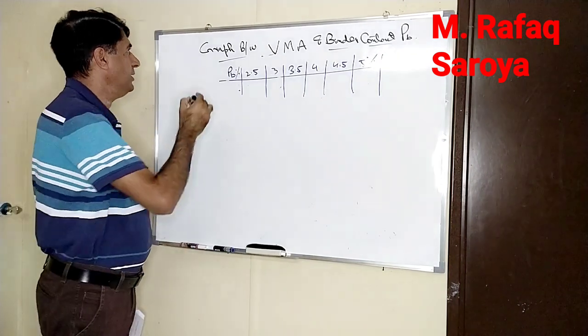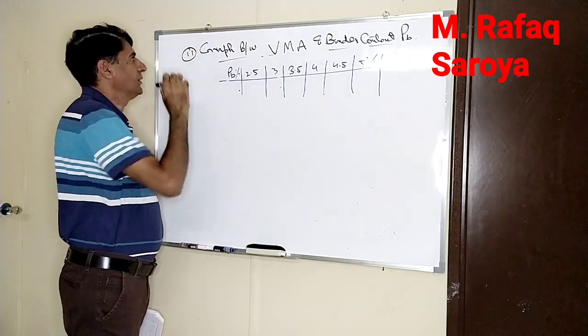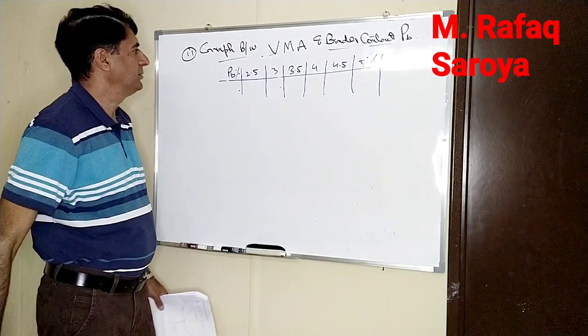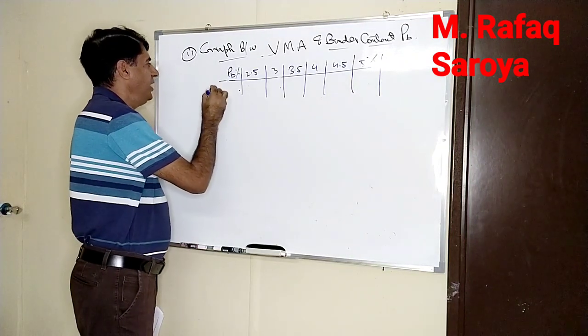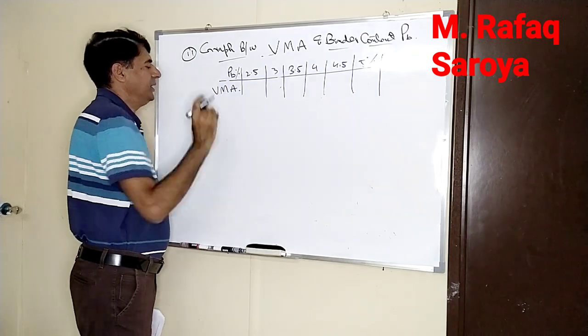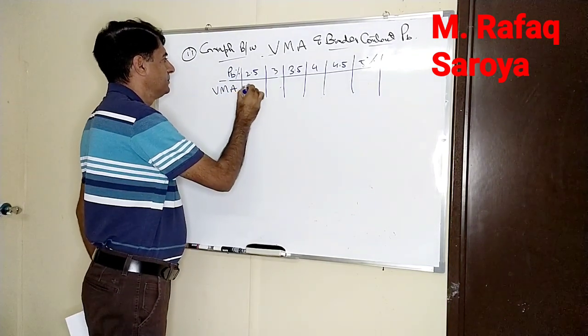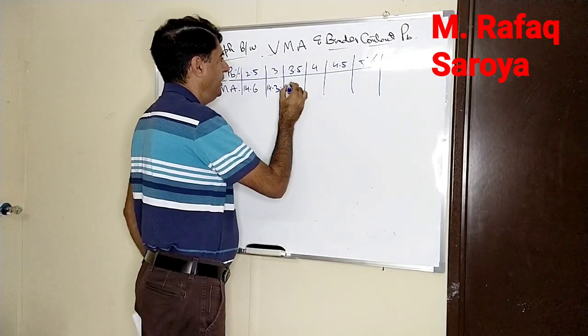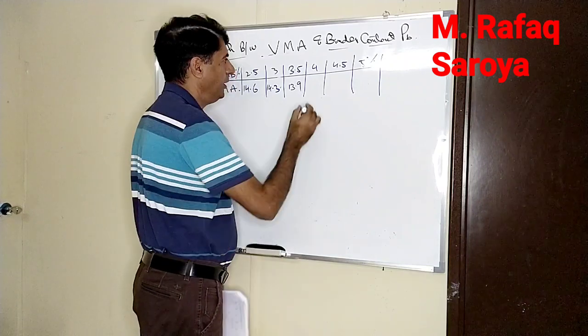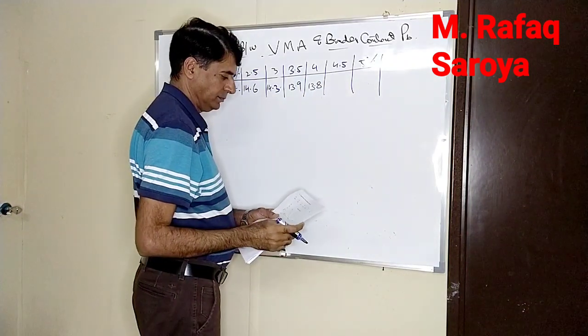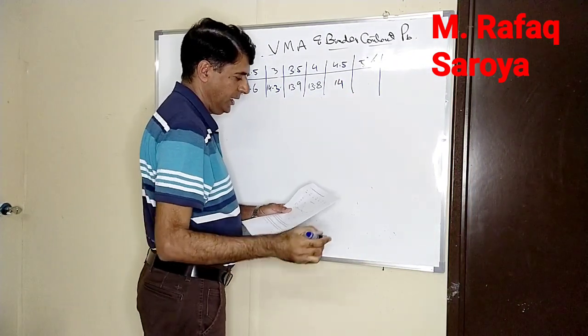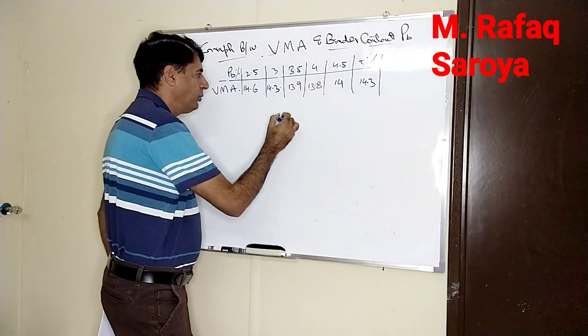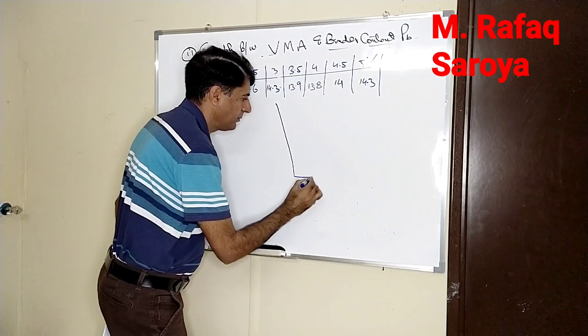Our second important characteristic is VMA. Now we will draw the graph between voids in mineral aggregate and binder content. Whatever the VMA value we have calculated already is being tabulated over here: 14.6, 14.3, 13.9, 13.8, 14, and next 14.3. This is the data. Now from this data we are going to draw a graph between these two quantities.